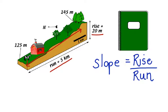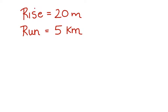Take a minute to write this down in your notebook. Now, let's look at what we know. The rise equals 20 meters, and the run equals 5 kilometers.